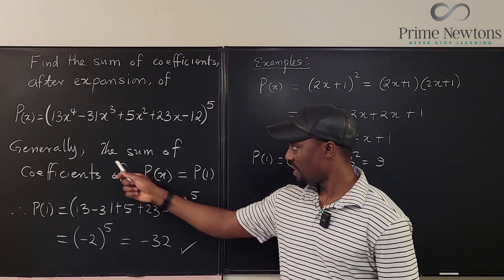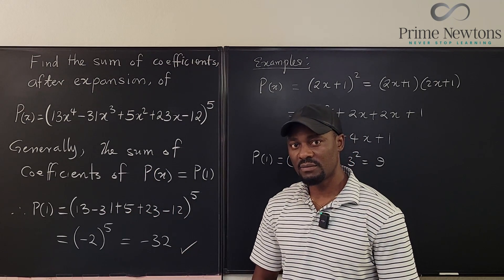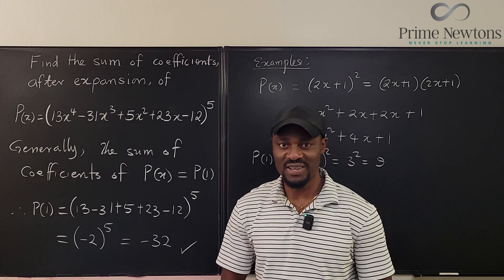And this is the key. The sum of coefficients of a polynomial P of X is P of one. Never stop learning. Those who stop learning, stop living. Bye-bye.